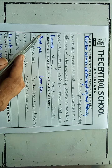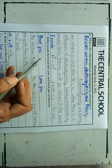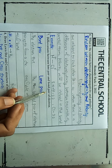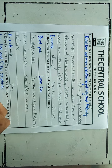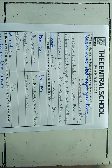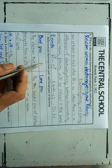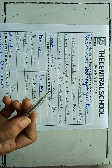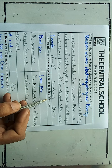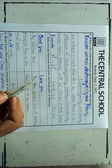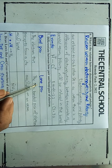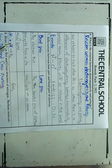Number seven: differentiate between lone pair and bond pair of electrons. In this question you have to differentiate between the lone pair and the bond pair of electrons. You have to draw a line between the bond pair and the lone pair and write down the differences.